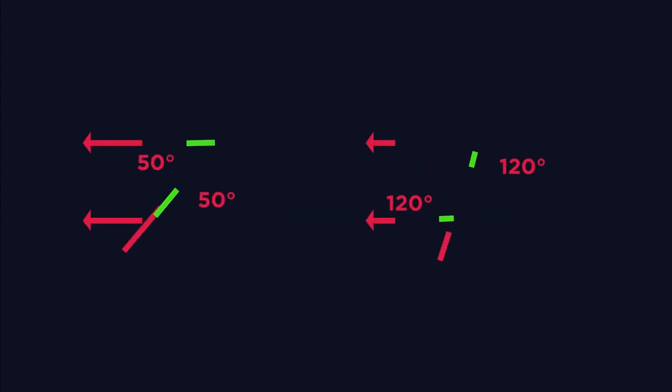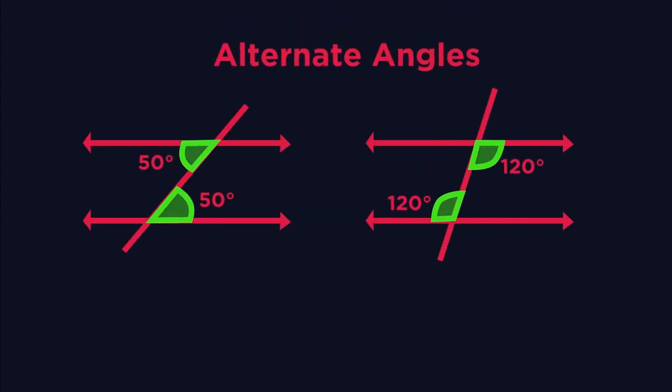So what do you notice about alternate angles? Alternate angles are always the same. They make a Z, so you can look out for Zs. But you do also need to remember the name, alternate.